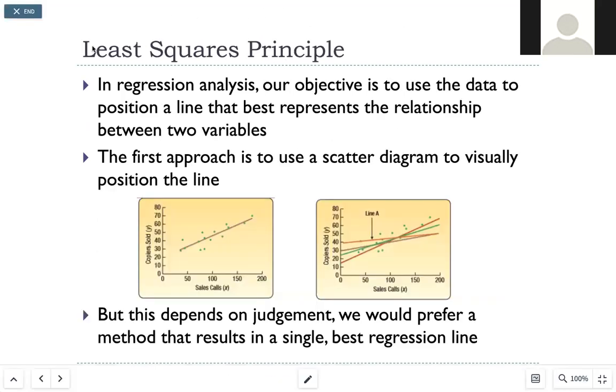This is the least squares principle. Our objective is to use the data so that it's the best fit for the relationship between the two variables. As you can see in the second graph, you can make an argument for all of these different lines that somebody visually just drew by hand. But the best way to find the line of best fit is going to be a regression line.